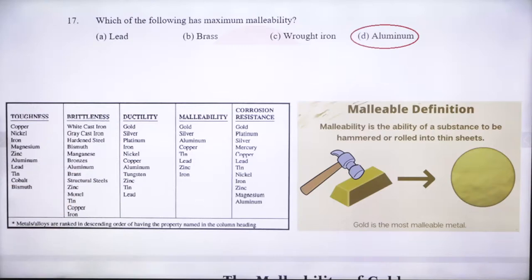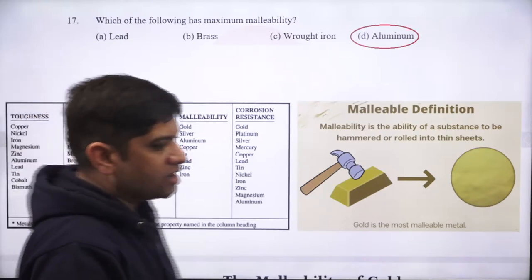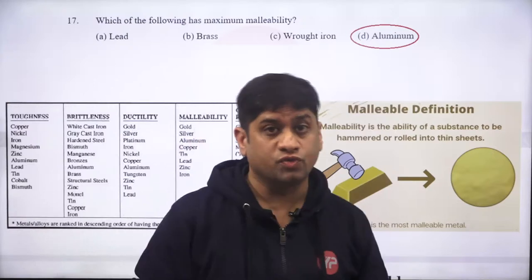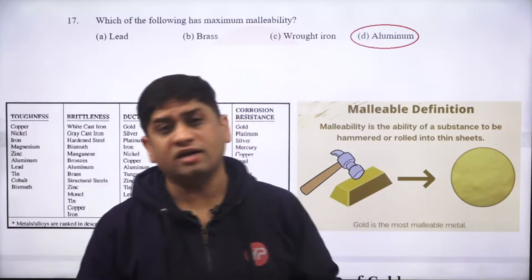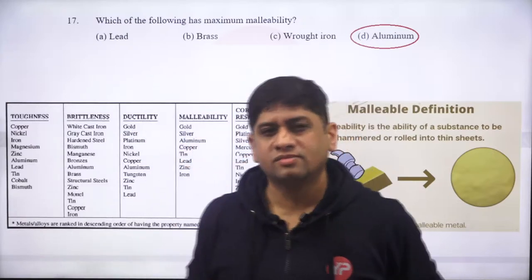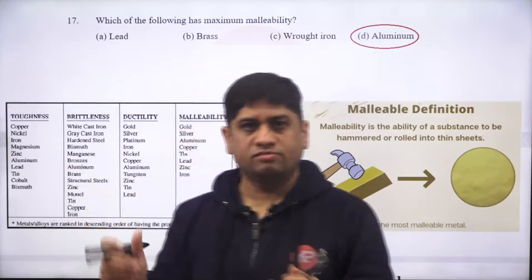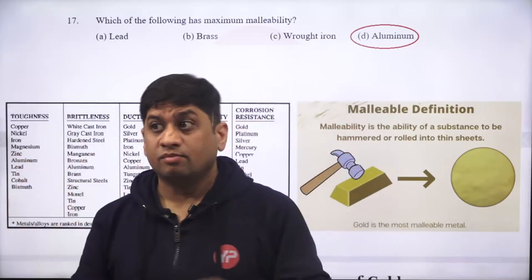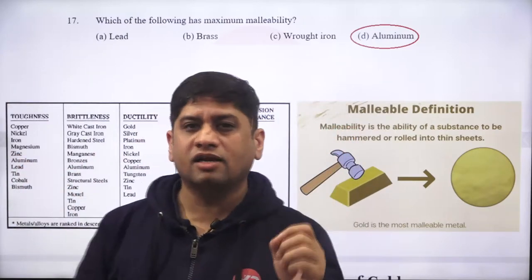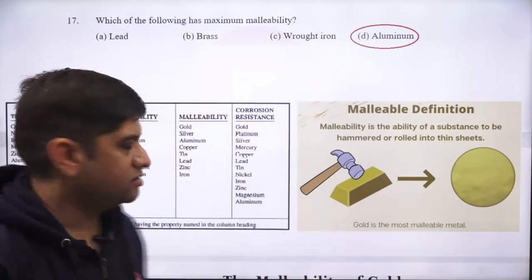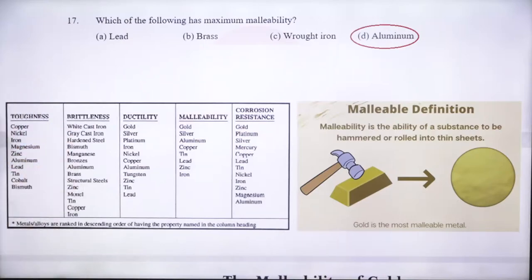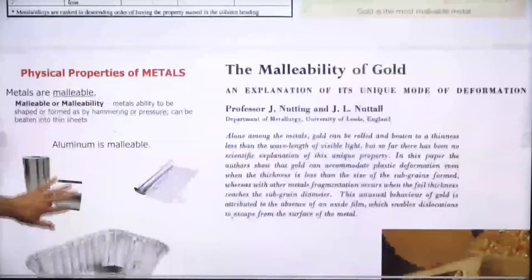Most brittle cast iron is white cast iron, followed by grey cast iron. Grey cast iron is useful due to its damping characteristics and is widely used. White cast iron is very brittle and not practically used. Grey cast iron is used for machine tool beds because of its excellent damping characteristic.